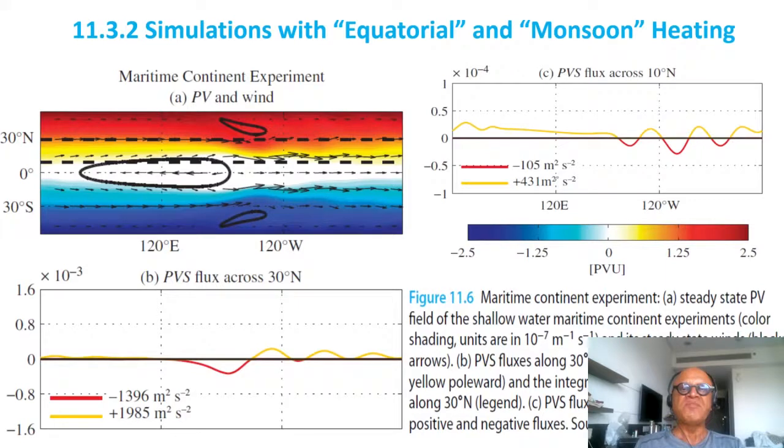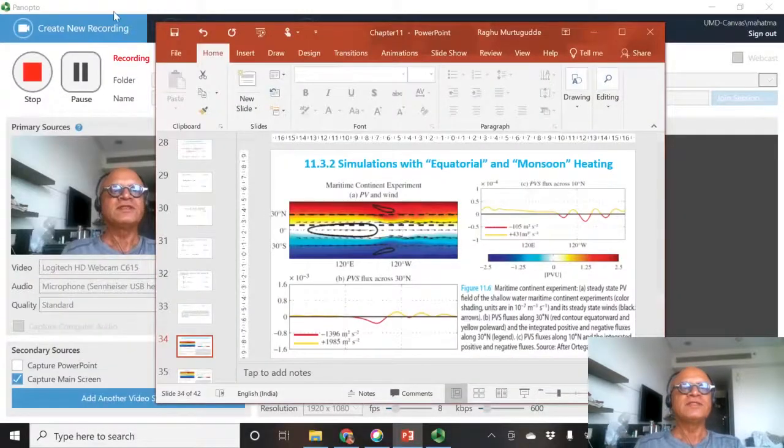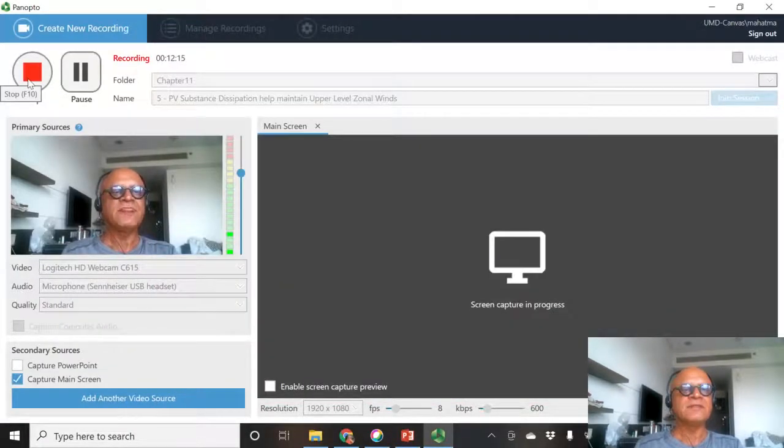We are now doing it on a shallow water system because now we can take the shallow water system and impose heating in the tropics and off the equator to simulate the monsoonal circulation and show some interesting extension of this basic idea. Okay, let's do that in the next podcast. I'll see you in the next one.